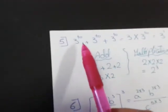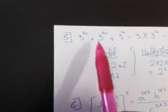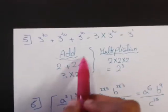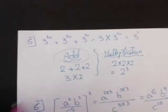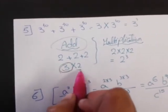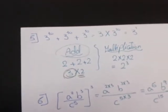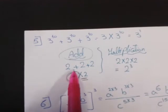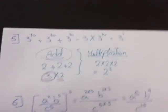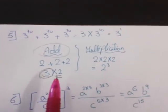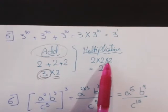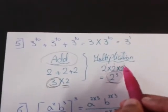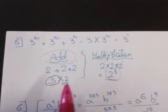Example 5: find the result of 3 power 10 plus 3 power 10 plus 3 power 10. In case of addition, if I have 2 plus 2 plus 2, I have three 2's, so I write 3 times 2. In case of multiplication, if I have 2 times 2 times 2, that means 2 repeated 3 times, written as 2 power 3, where I add the powers.